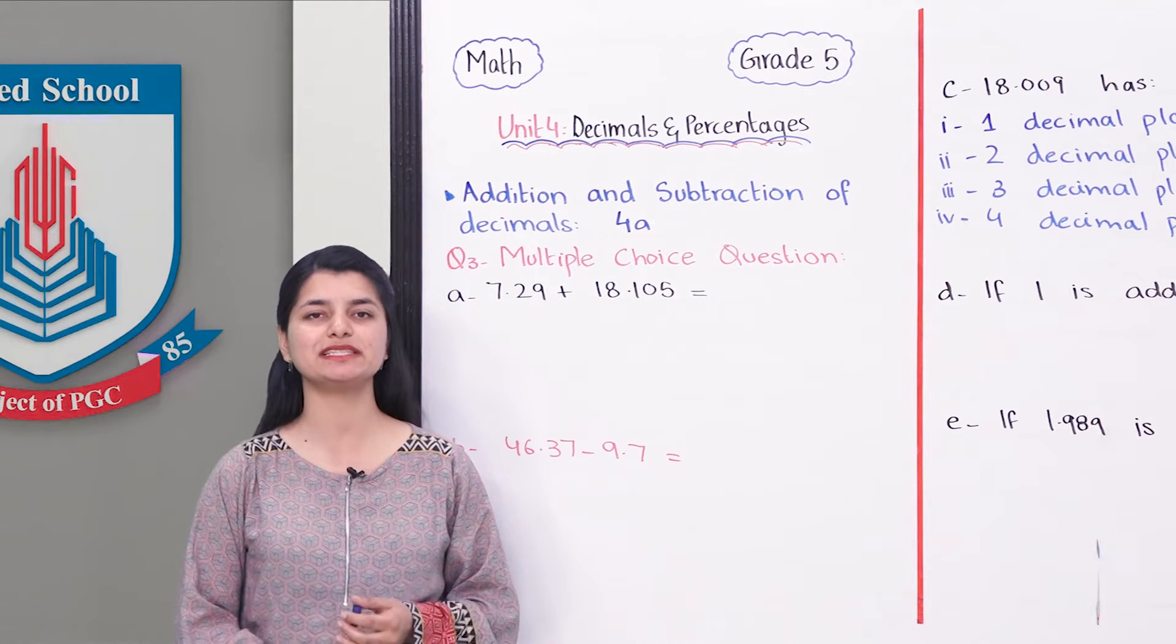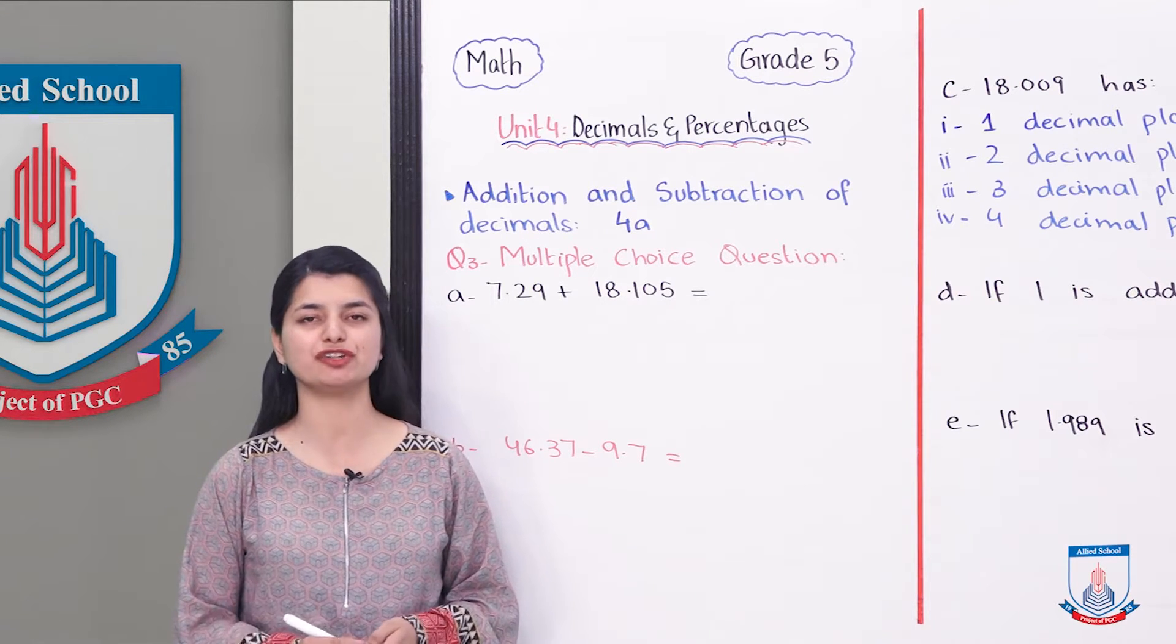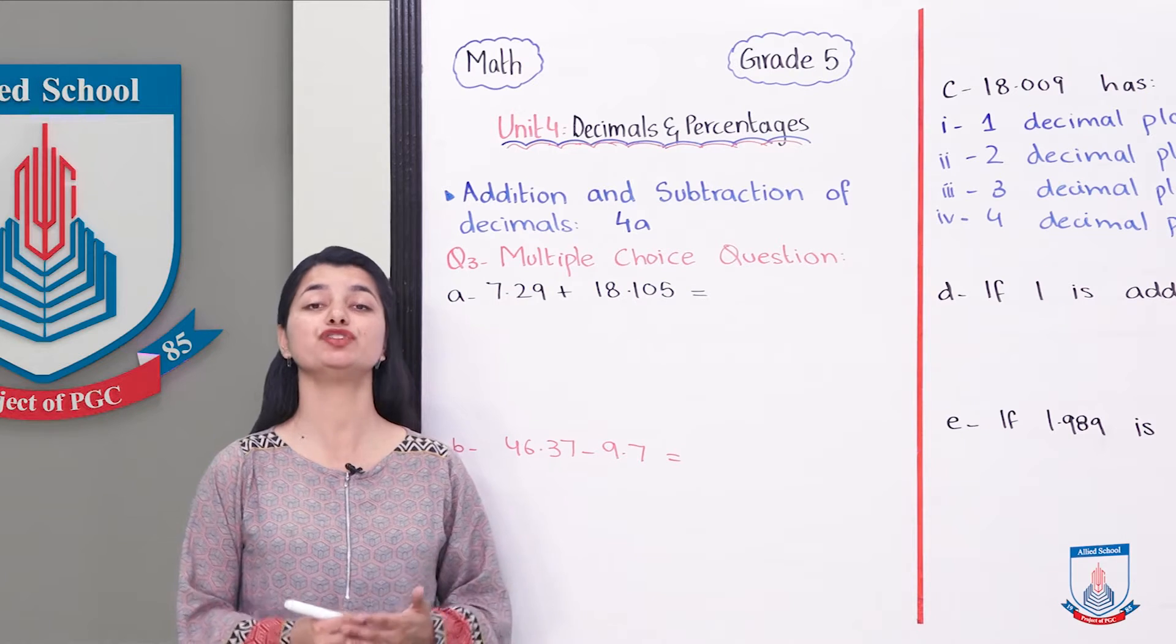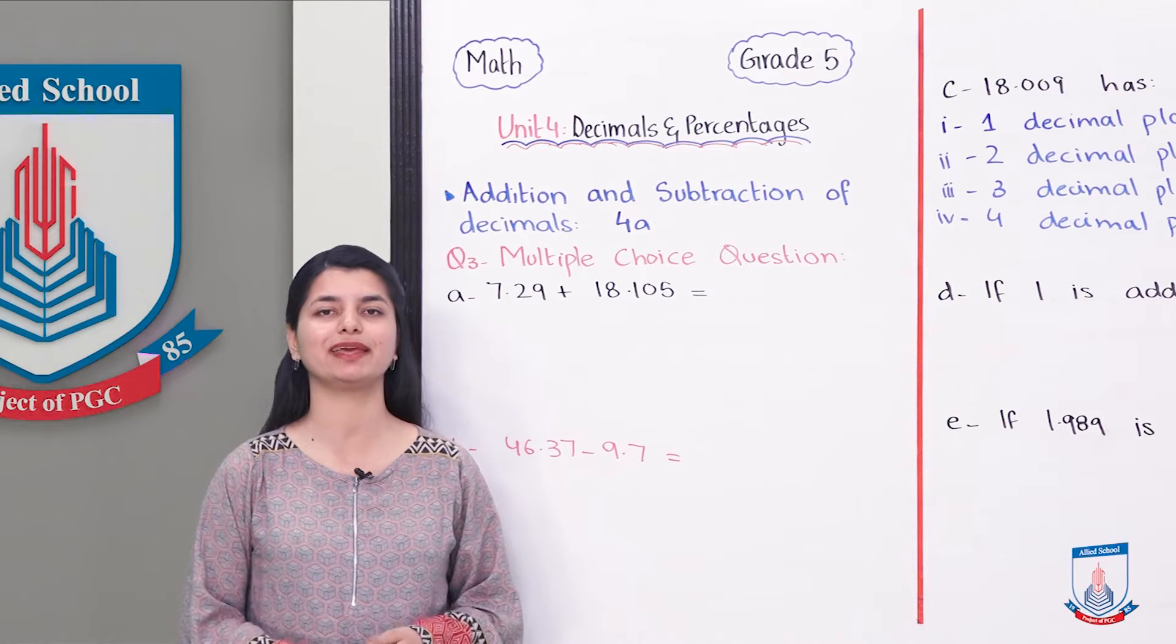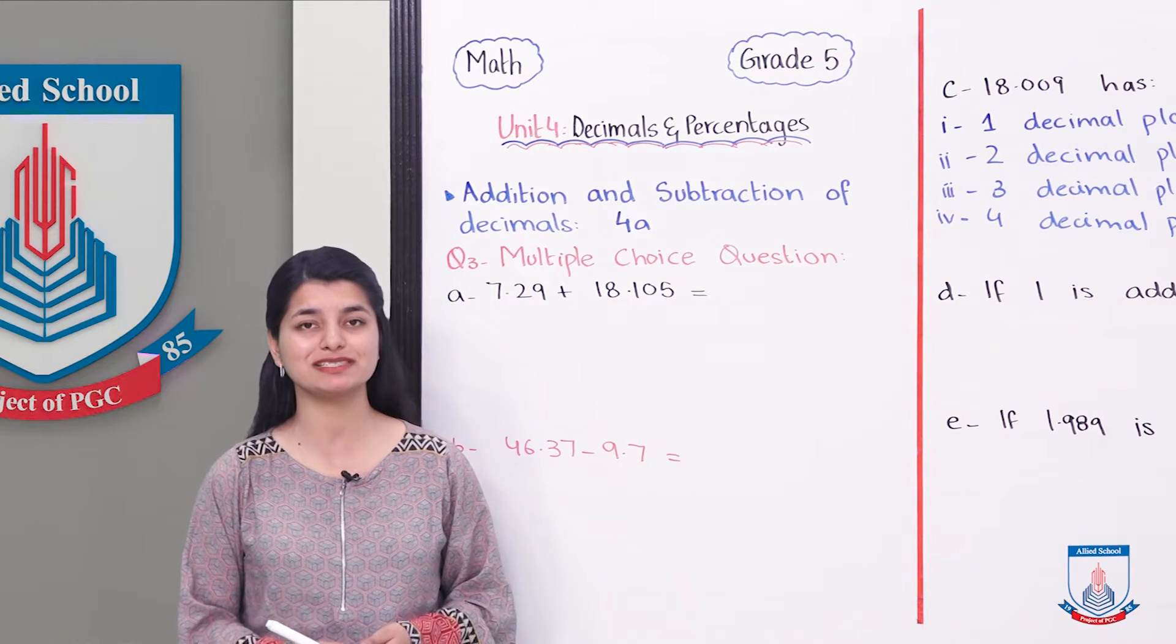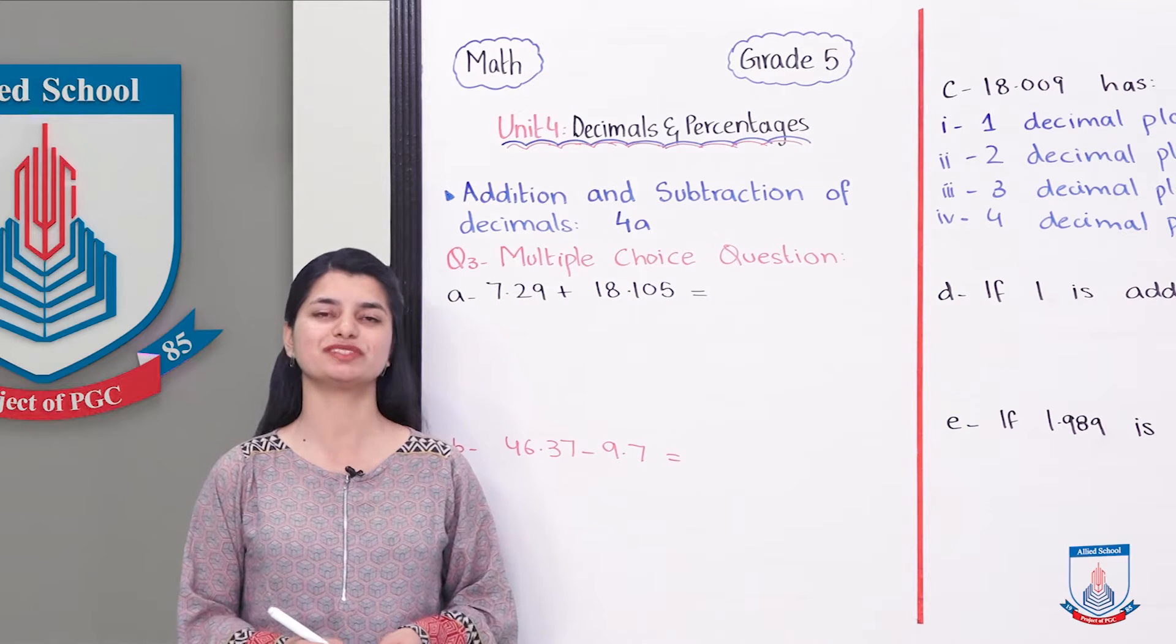Exercise 4A is basically about addition and subtraction of decimals. So we have to resume it, question number 3, in which you have multiple choices. You have to select the best choice from them.